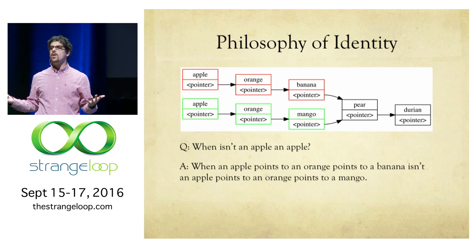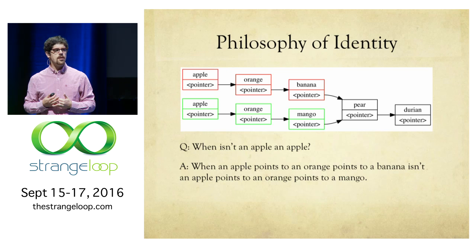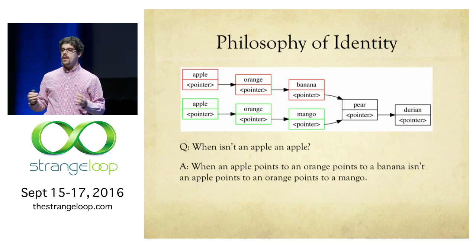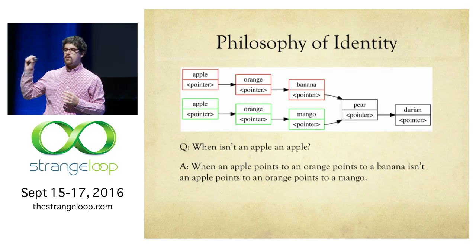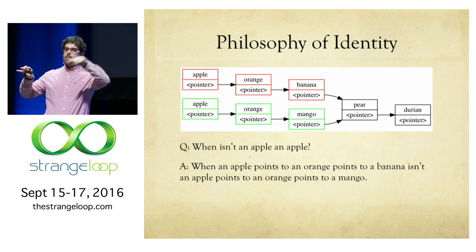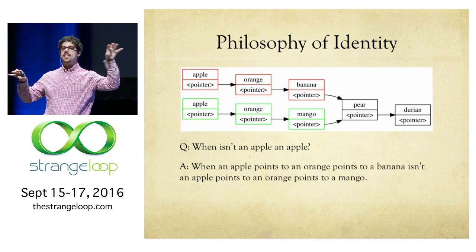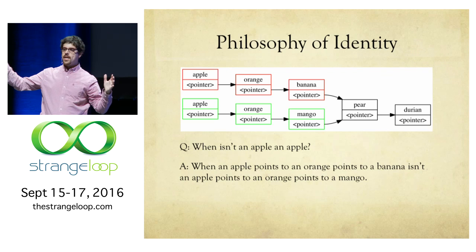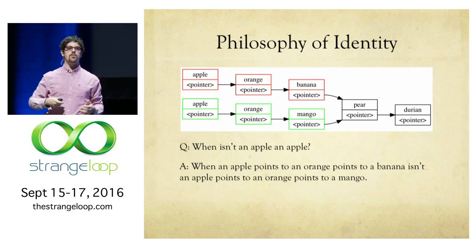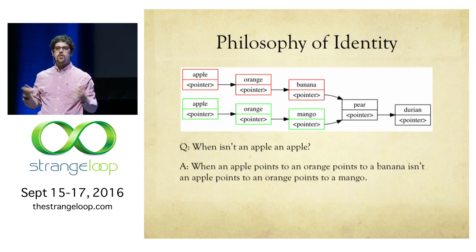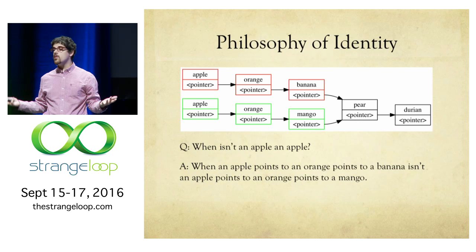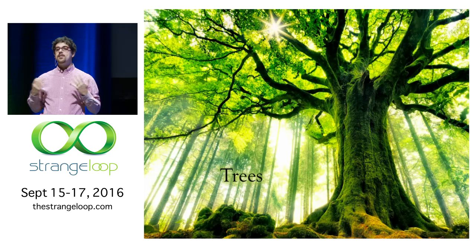What we're doing is copying the path — tracing from the thing we want to mutate all the way back to the root of the data structure. The root is something which nothing points to. We have to copy this entire path to the root. In the worst case, copying the entire path could be the whole list. So we need to do better, and we're going to do better by using trees.